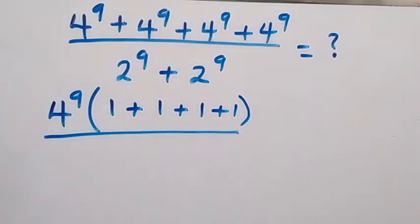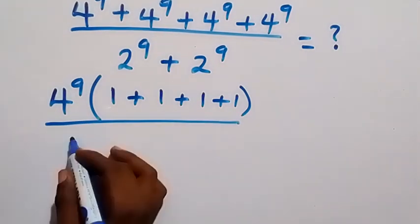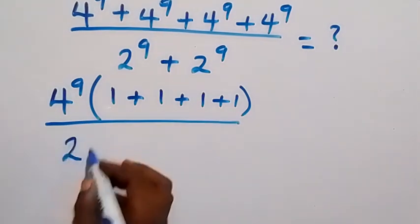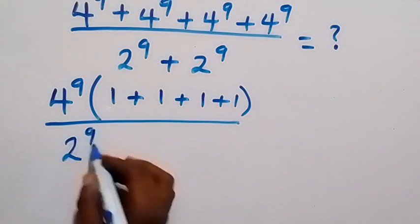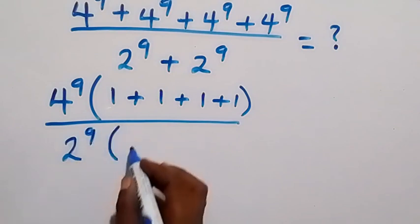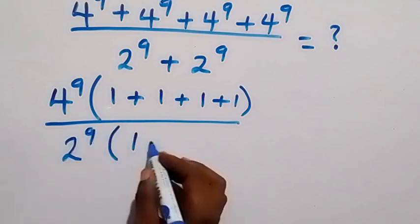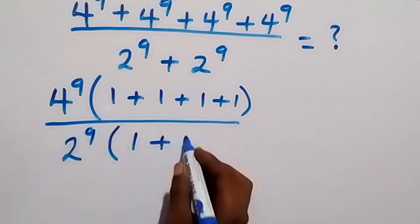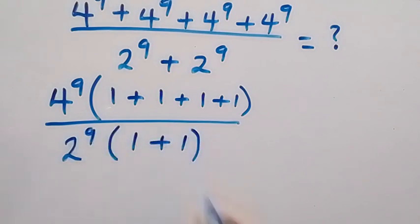In the denominator we can also factor 2 raised to power 9, and this will be 2 raised to power 9 into brackets 1 plus 1.